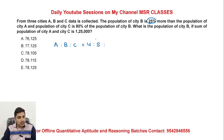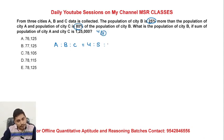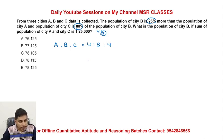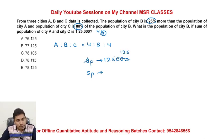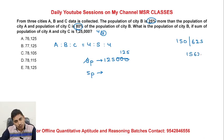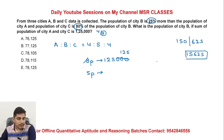80% of C is four-fifths. If the sum of population of A and C — 8 parts — is given as 125,000. So B value: 8 parts times 125 equals 125 squared, giving 150,625. Then 15,625 arrived.